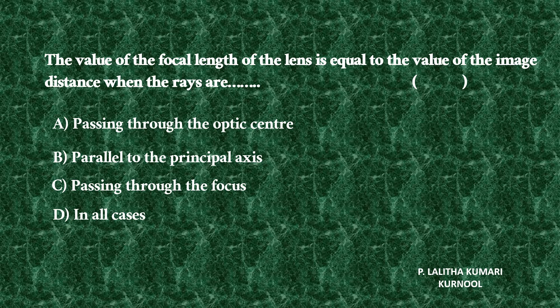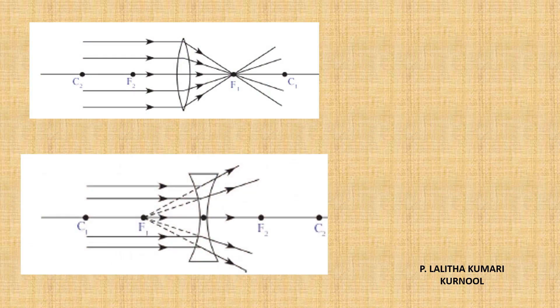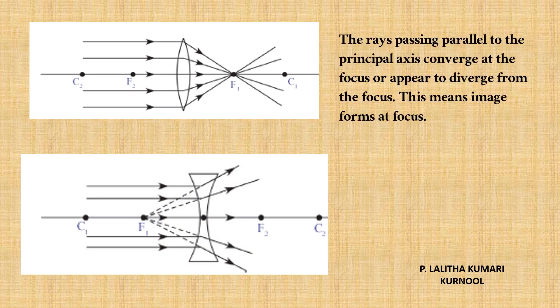Let us see the answer. The rays which are parallel to the principal axis passing through the convex lens, and the rays which are parallel to the principal axis passing through the concave lens — these rays converge at the focus or appear to diverge from the focus. This means the image forms at the focus.